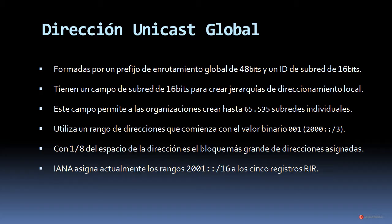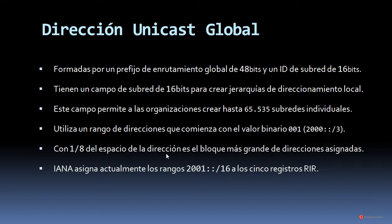Empezamos a estudiar los diferentes tipos de direcciones IPv6, comenzando por la Unicast Global. Están formadas por un prefijo de enrutamiento global de 48 bits y un identificador de subred de 16 bits. Este campo de subred de 16 bits permite generar jerarquías de direccionamiento local, igual que hacíamos con IPv4, y permite a las organizaciones generar hasta 65.535 subredes individuales. Utiliza un rango que comienza con el valor binario 001, representado como 2000::/3. El IANA asigna actualmente los rangos 2001::/16 a los cinco registros RIR (Registro Regional de Internet).